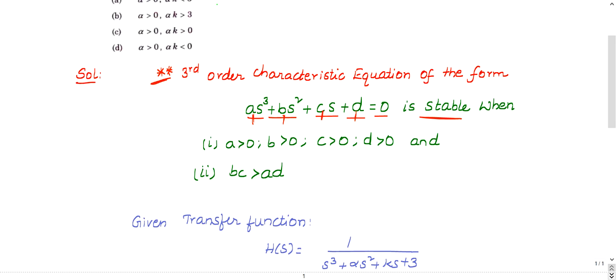For a third-order characteristic equation, the system is stable when all coefficients must be positive. First condition: a > 0, b > 0, c > 0, d > 0. That's the first condition.